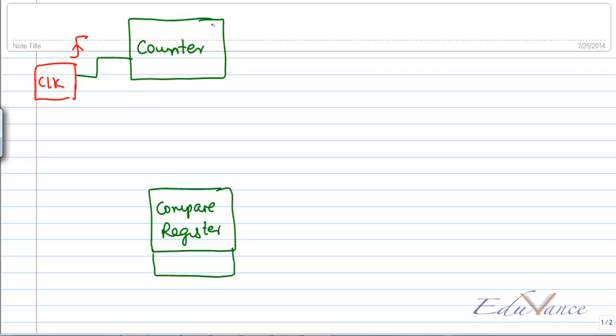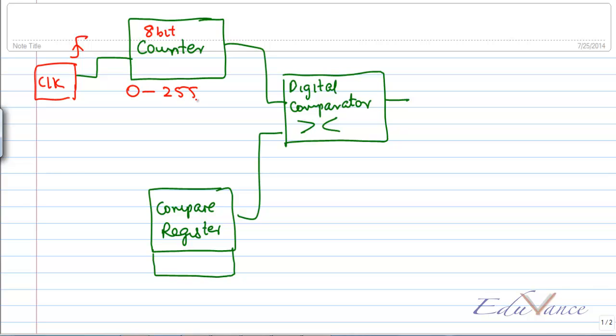And then if I use a digital comparator, either greater than or less than. Now let's look at those cases. So let's take an example. If I have an 8-bit counter, so it will count from 0 to 255 and then roll over to 0.